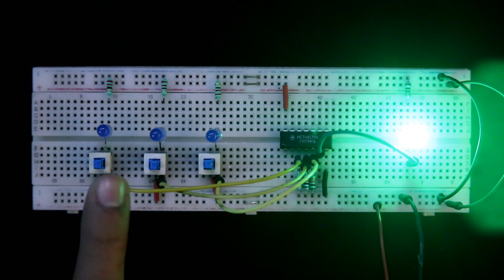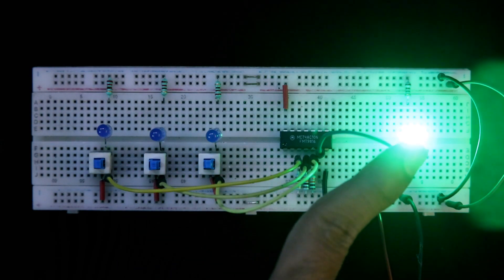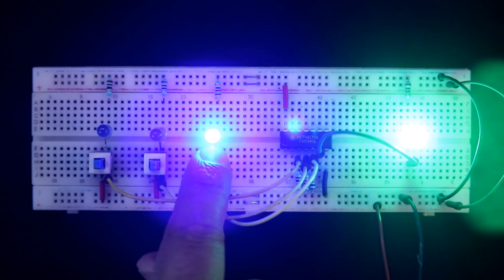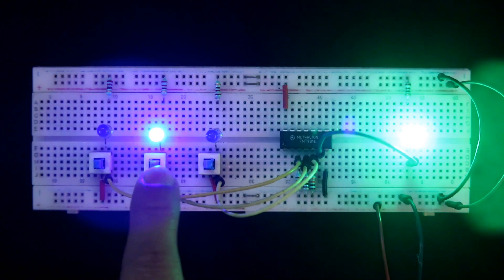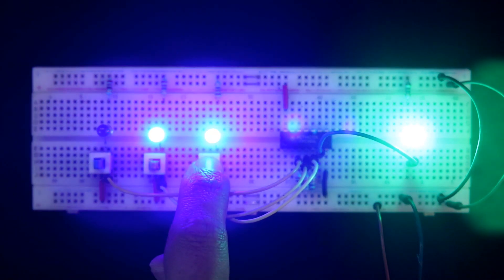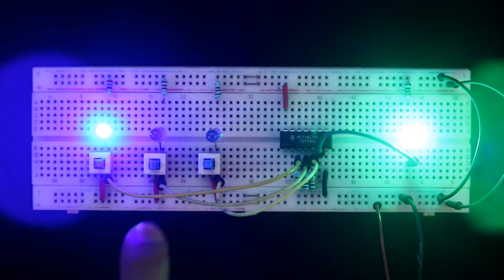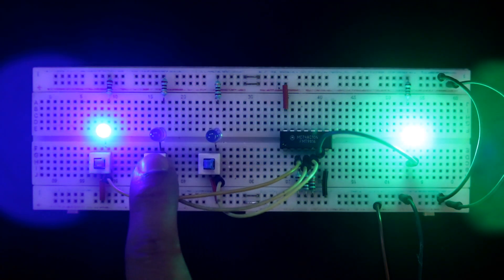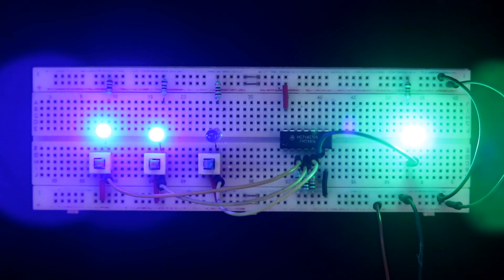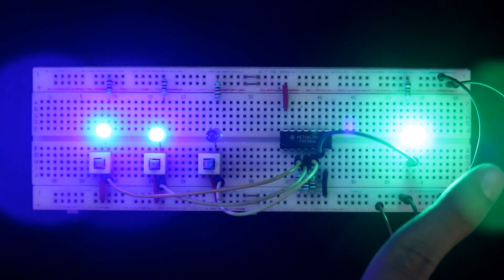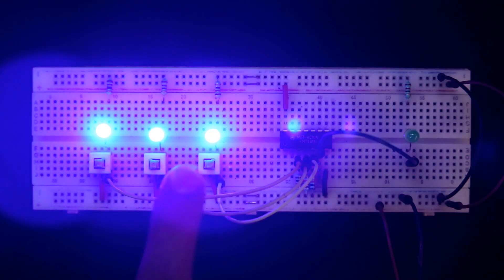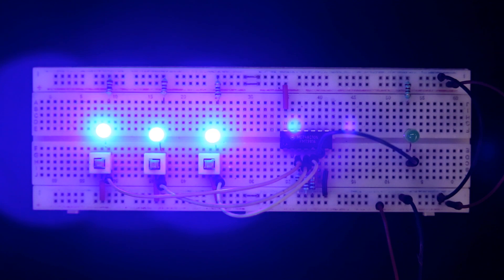So as you can see, all 3 inputs are 0, so it is high. 001, 010, 011, 100, 101, 110. And when all 3 inputs are 1, then only we will get 0. So this is how this IC works, 3 input NAND gate IC.